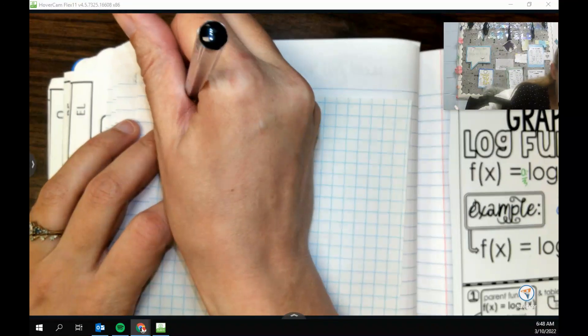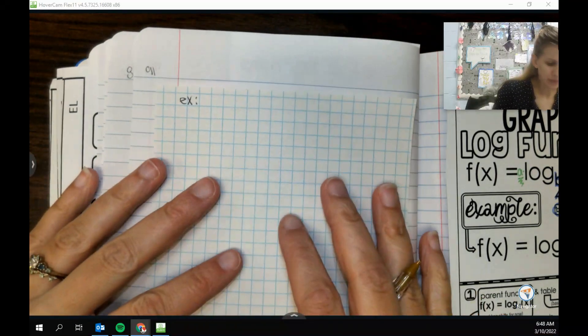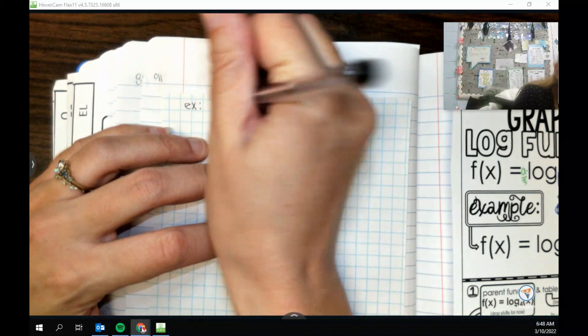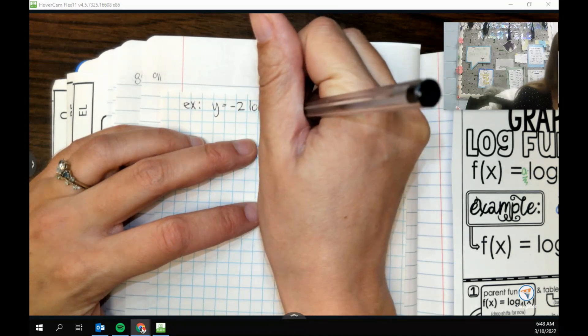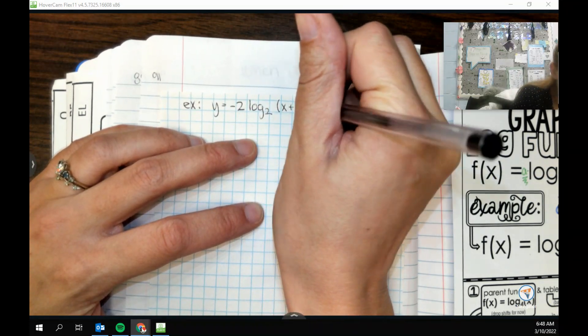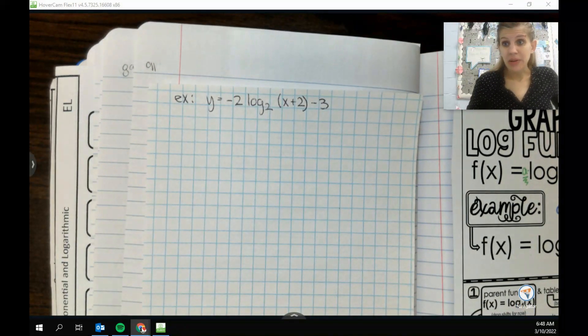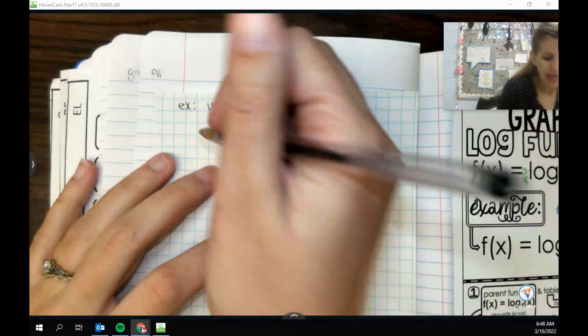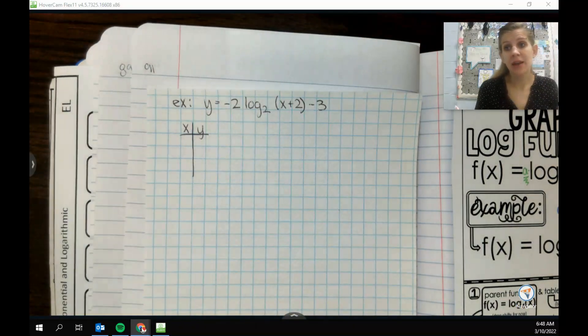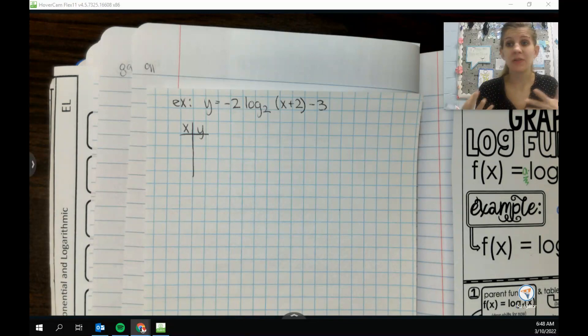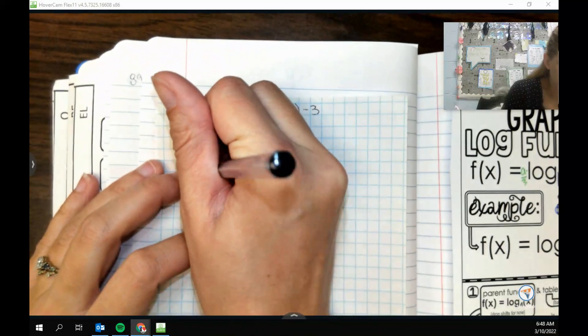All righty, let's do something like this. y equals negative 2 log base 2 of x plus 2 minus 3. Okay. So we're going to build our table, and we want to find all of our key things. So when we're building our table, we start with our x and our y. And this time, instead of picking my x's, I'm picking my y's, which feels very awkward because we usually pick our x's. So for y, I'm going to pick negative 1, 0, 1, always.